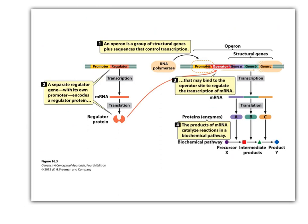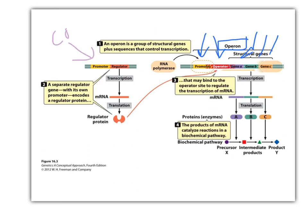Our generic operon structure: promoter, operator, gene, gene, gene. There's usually a separate regulator gene with its own promoter — a regulator sequence on double-stranded DNA. This regulator is almost always constitutive, meaning it's always on. So we're always making this regulator protein.